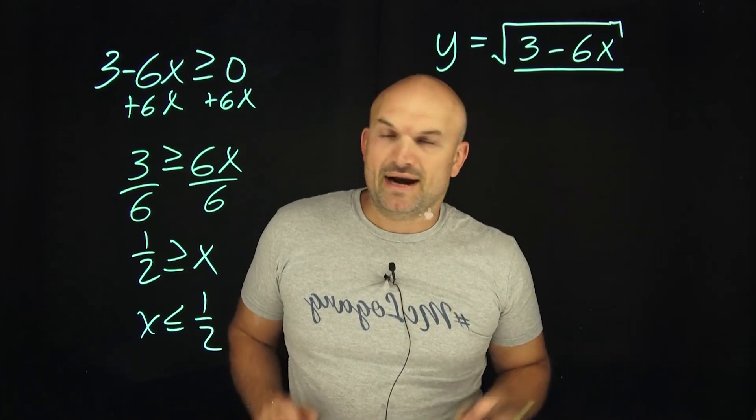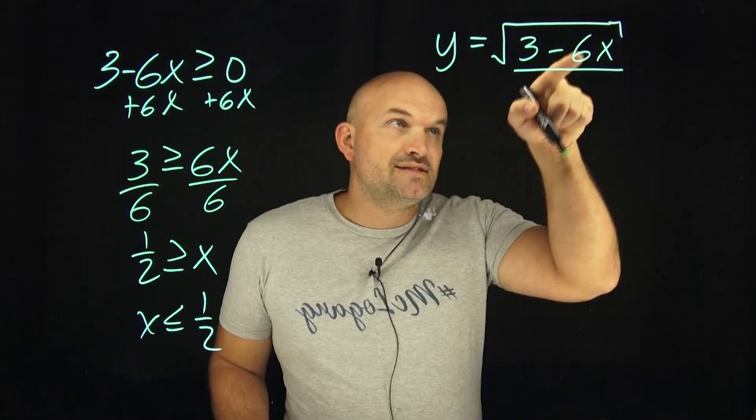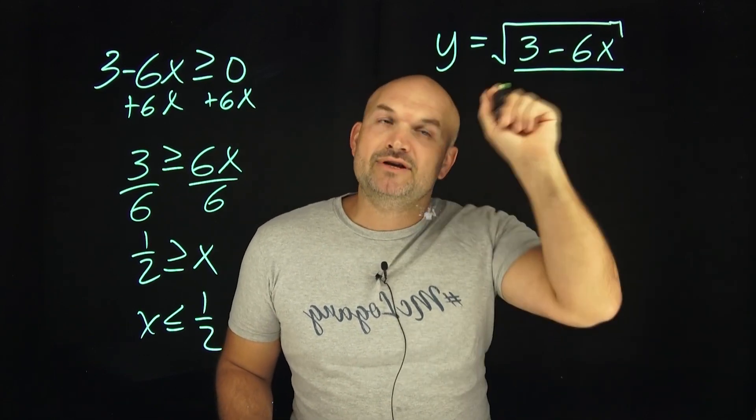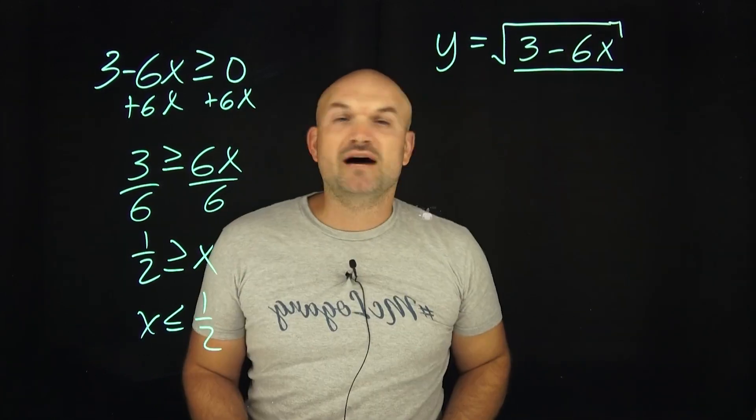Let's go and pick a number that is larger than one half just to make sure it's not in the domain. Let's pick one. Six times one is six. Three minus six is negative three. And we know we cannot take the even square roots of a negative number.